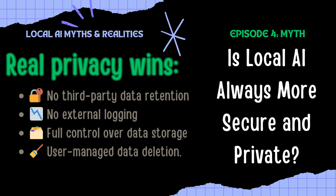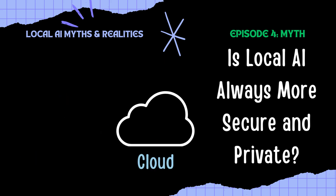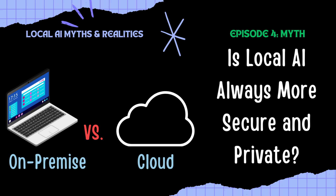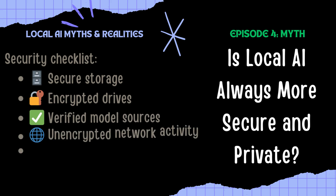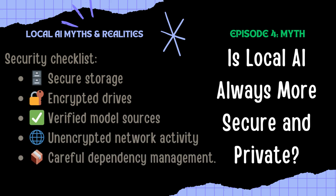But the reality is this: security and privacy are never about location alone — they're about practices. Whether you're in the cloud or on your laptop, you need strong operational security: encrypted drives, verified model sources, secure storage, regular system updates, and careful dependency management. Without those, local is just a false sense of safety.